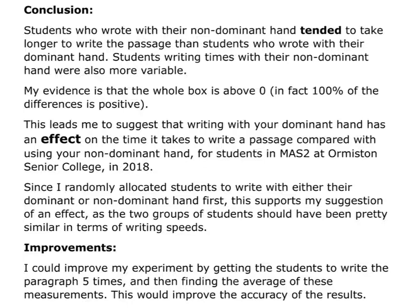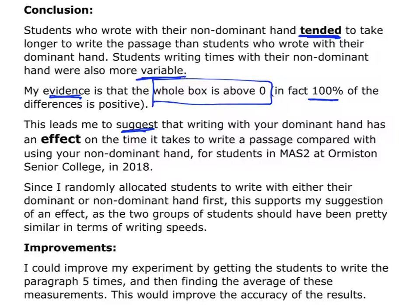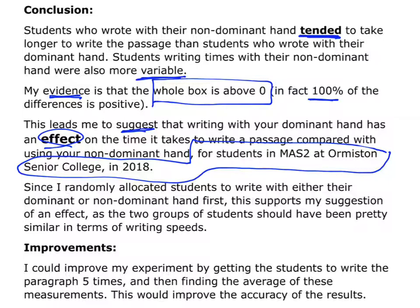In terms of my conclusion, I can say that students who wrote with their non-dominant hand tended to take longer to write the passage than students who wrote with their dominant hand. The non-dominant hand times are also a bit more variable. My evidence is that the whole box is above zero — 100% of the differences are positive. So I'm going to suggest that writing with your dominant hand has an effect on the time it takes to write the passage, compared with using your non-dominant hand — specifically for students in MAS2 at OEC in 2018. And because I've randomly allocated students to write with one or the other first, I've designed my experiment well.